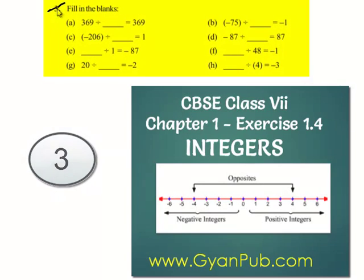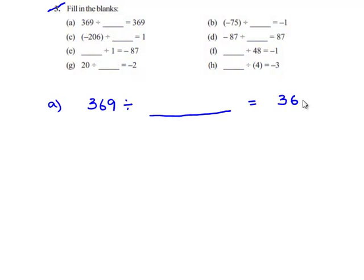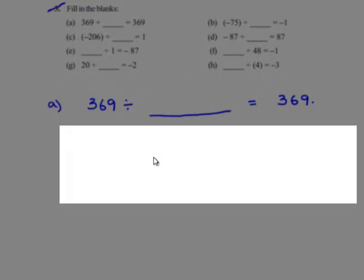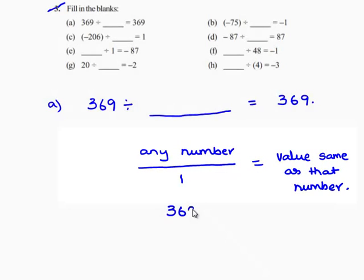We will see the third question. The first bit is: 369 divided by some integer gives 369. We know that when any number is divided by 1, it gives the same value as that number. Therefore, 369 divided by 1 gives 369. Therefore, the answer is 1.